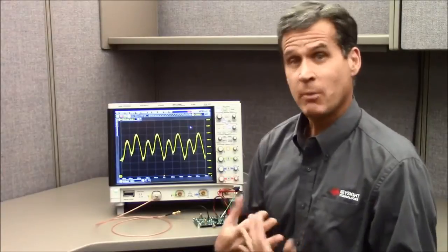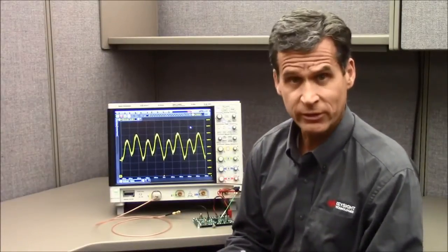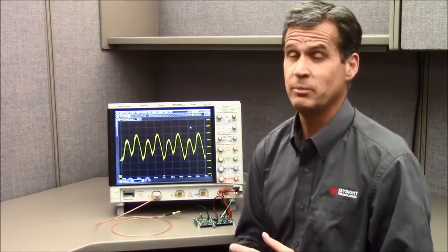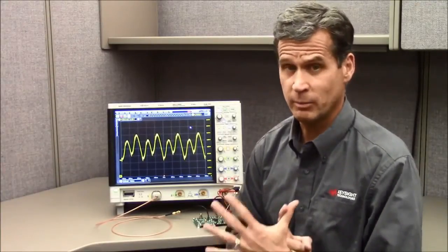The type of measurements that users make when they're making power integrity measurements include supply drift, supply compression, PARD, which is commonly known as periodic random disturbances, static and dynamic load response. People also want to look at how their product behaves over temperature. And then finally, high frequency transients and noise on their supplies that can cause clock and data jitter in their system.